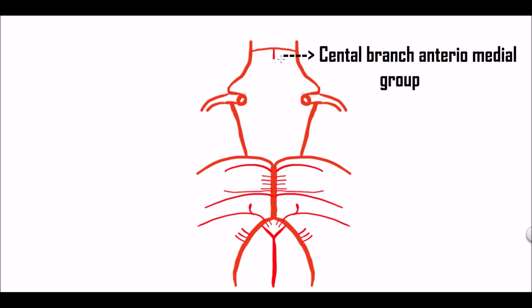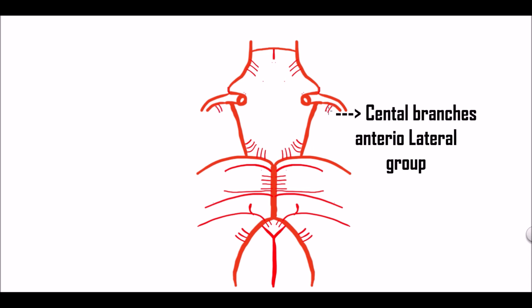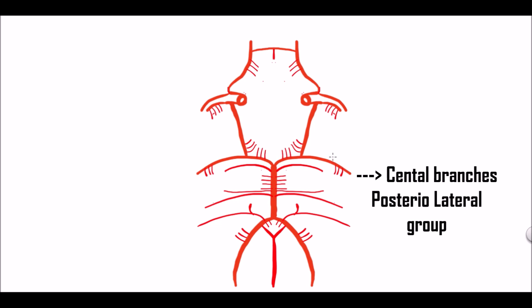Now let us see the central branches. These are the anterior median group of the central branches — they arise from the anterior cerebral as well as the anterior communicating artery. These are the posterior median group, from the posterior communicating and posterior cerebral artery. These are the anterior lateral groups of central branches, arising from the middle cerebral artery. And this is the posterior lateral group, which arises from the posterior cerebral artery. These are the central branches.